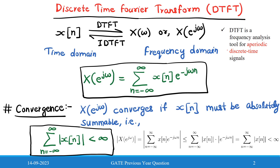The Discrete Time Fourier Transform is a frequency analysis tool for non-periodic discrete time signals. The expression for DTFT is: X(e^jω) = summation from n = −∞ to ∞ of x[n] · e^(−jωn). The convergence condition for DTFT is that x[n] must be absolutely summable, meaning the summation of |x[n]| from n = −∞ to ∞ must be less than infinity.